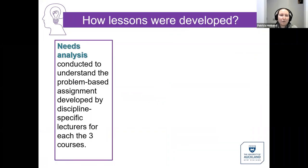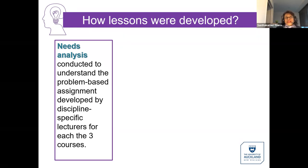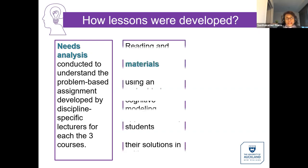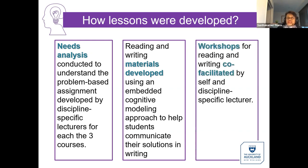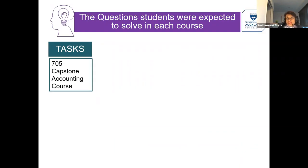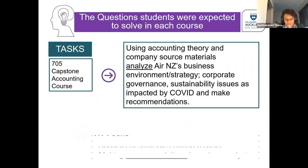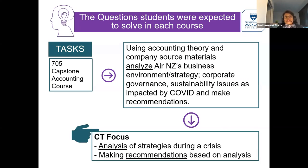So if you want to talk us through how these lessons were developed — I first did a needs analysis by understanding the problem-based assignment within each of the three disciplines by discussing it with the lecturers. I then developed materials using the cognitive modelling approach to help students communicate the problems in writing, and finally I co-facilitated the workshops using those materials. In 705, a capstone accounting course, the focus was on analysing strategies during a crisis and making recommendations.